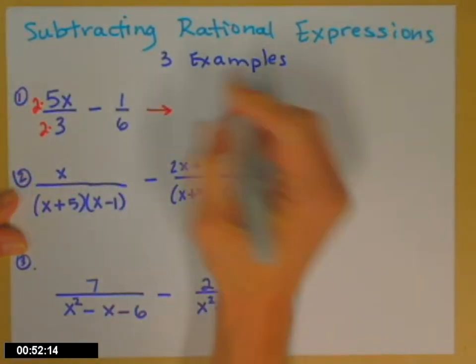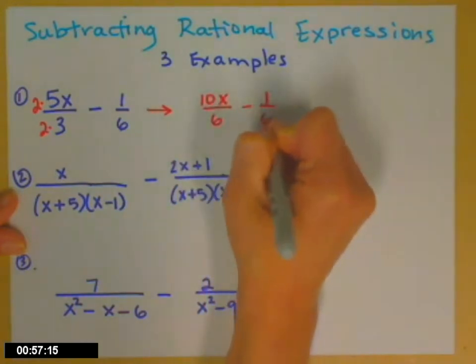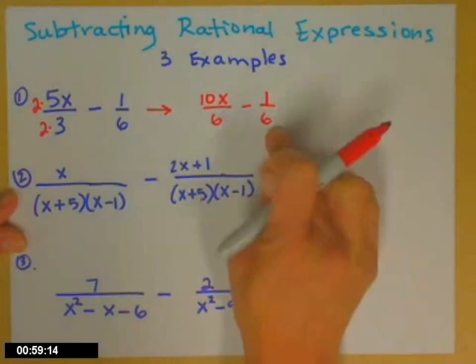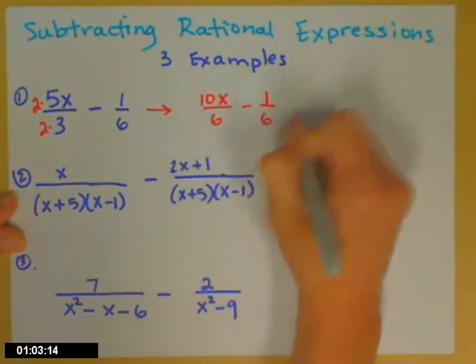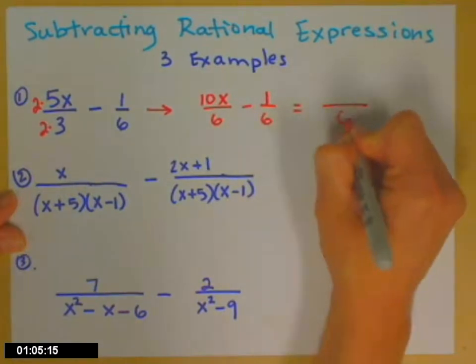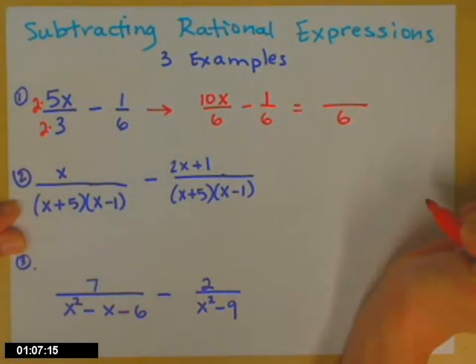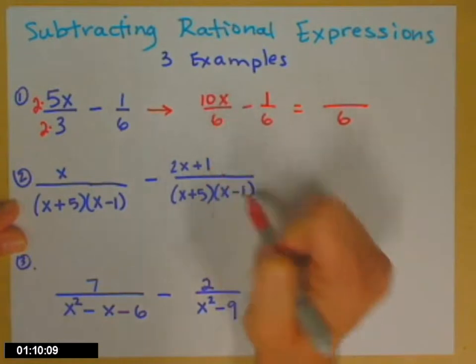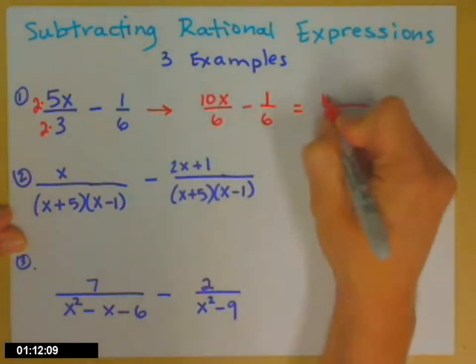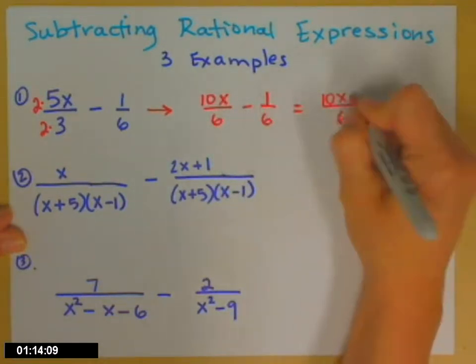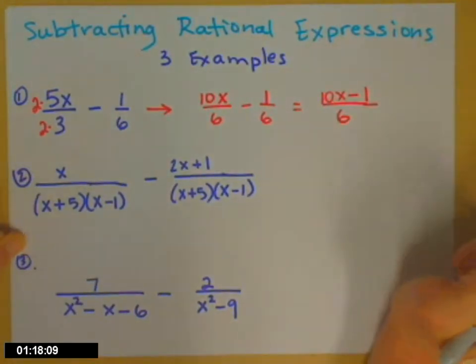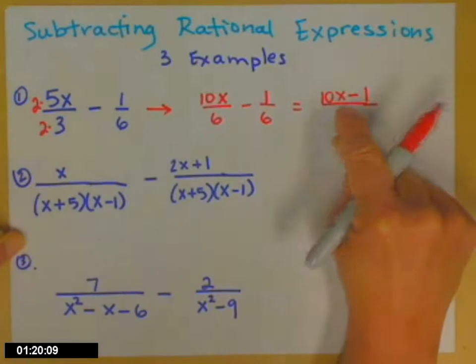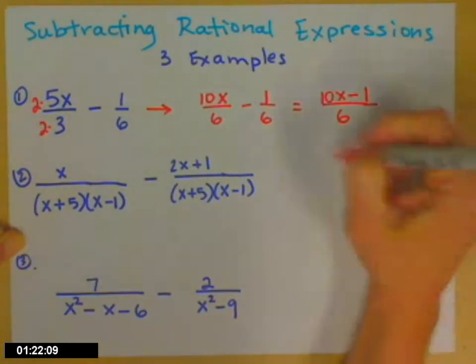So that expression is going to change to be 10x over 6 minus 1 over 6. Now I have two expressions with a common denominator. So that common denominator is going to be the denominator of my answer, unless it might reduce in a bit. And then my numerator is just the numerator of the first fraction minus the numerator of the second fraction. Now remember, 10x and 1 can't combine because the 10x has an x in it and the 1 doesn't have an x in it, so that's all I can do there.